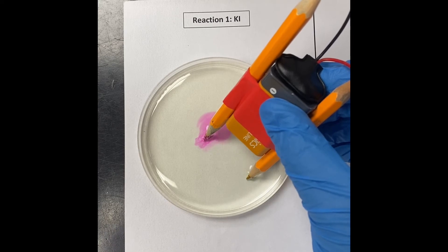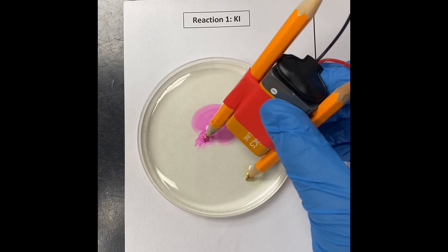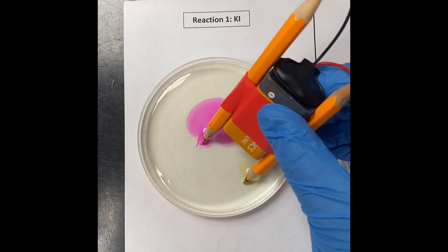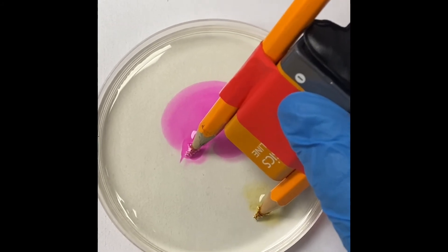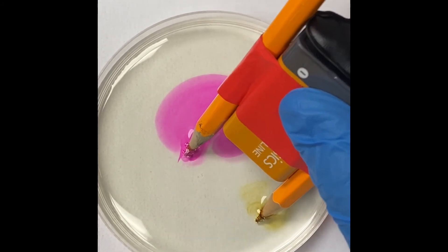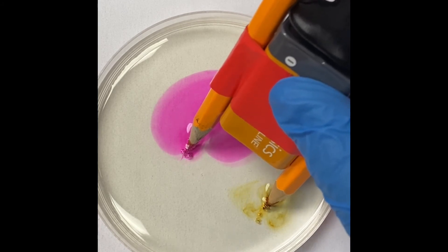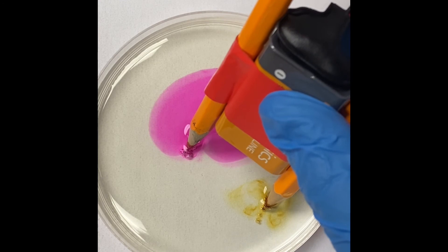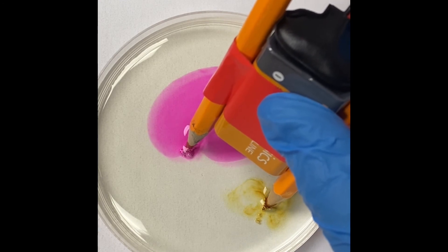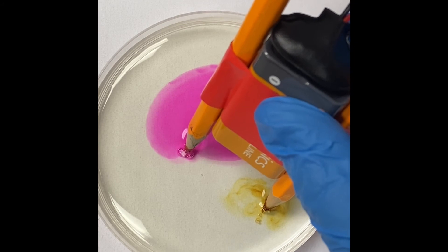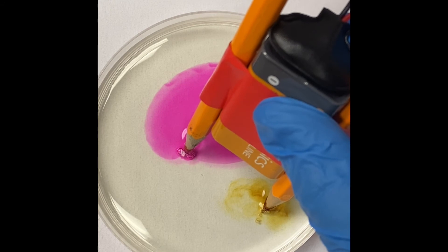Clearly one of the electrodes, you can clearly see some bubbling there, and you see a color change happening. The phenolphthalein is turning pink, and the other electrode, you can see swirls of yellow. So something is happening to the potassium iodide. This is an aqueous solution. So that is what I'm noticing.